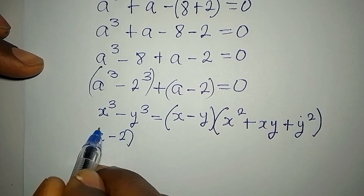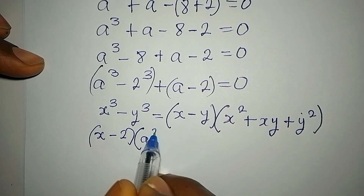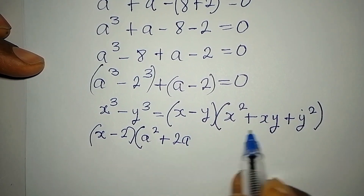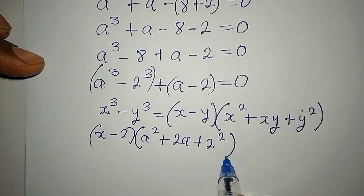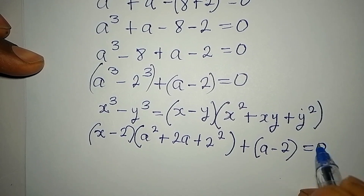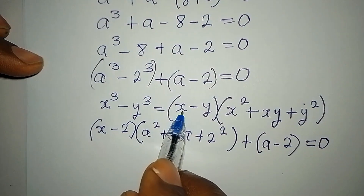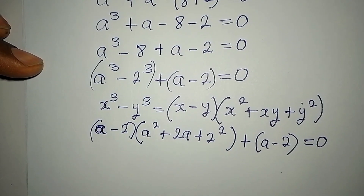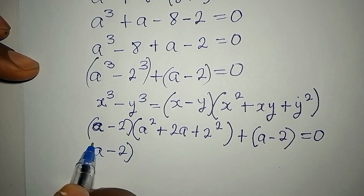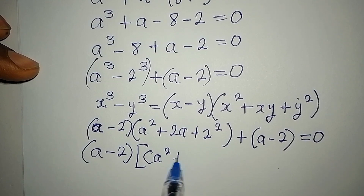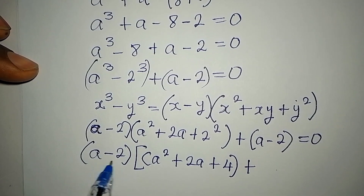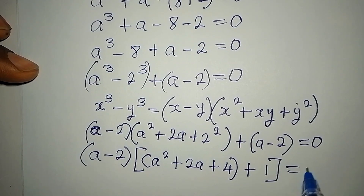So from there, x minus y becomes a minus 2. We write a minus 2, then times x squared which is a squared, plus xy which is a times 2 giving 2a, then plus y squared which is 2 squared, giving 4. Then we close the bracket and add a minus 2, with everything equal to 0. So a minus 2 is a common factor, and we take it out to get a minus 2, times a squared plus 2a plus 4 plus 1, equals 0.